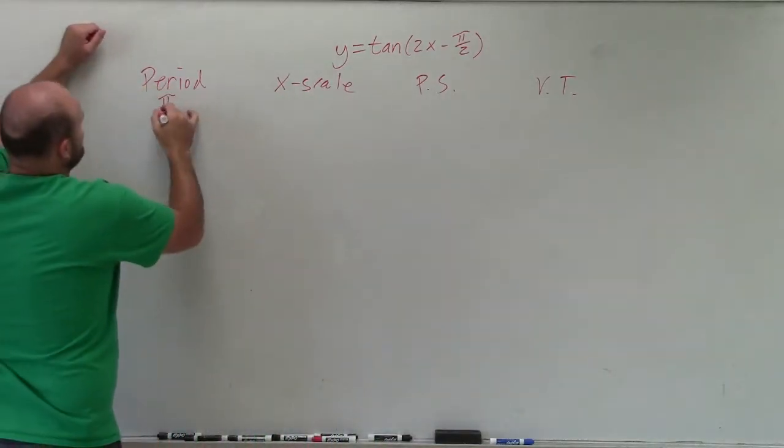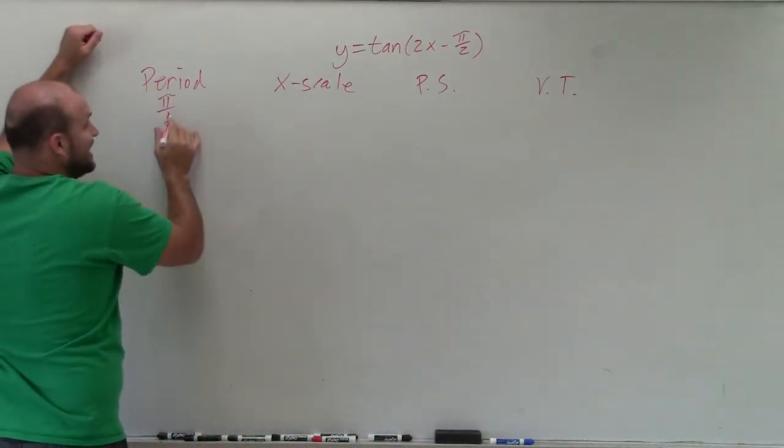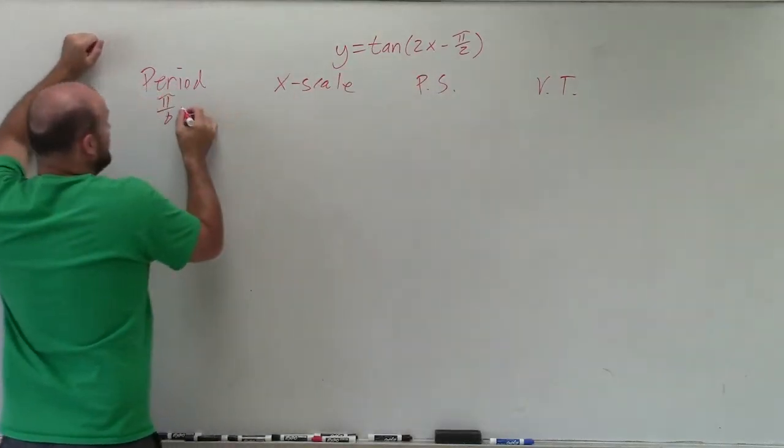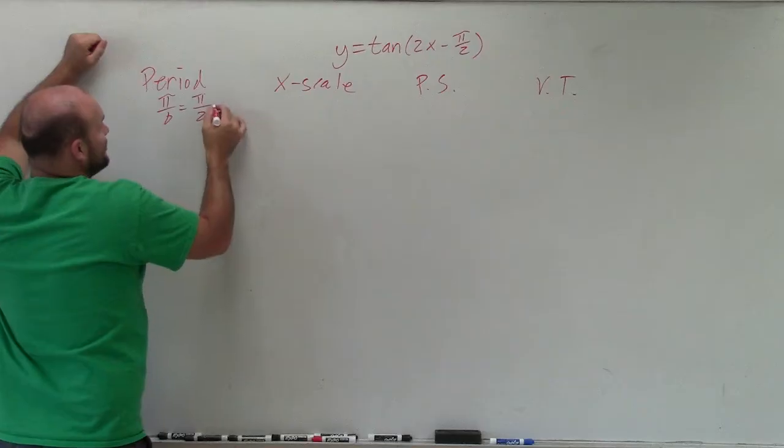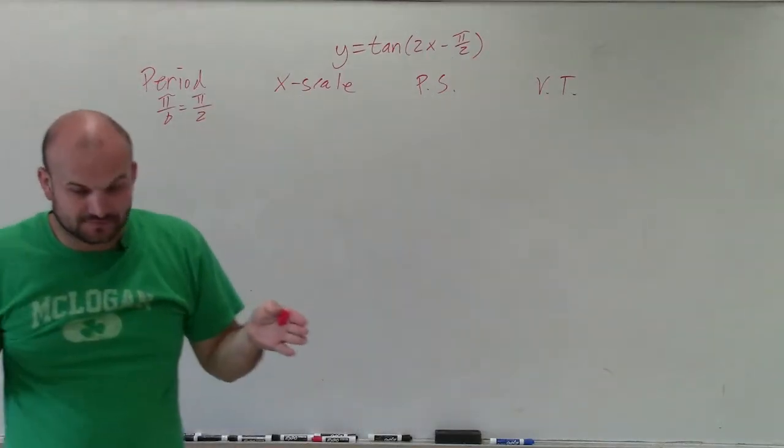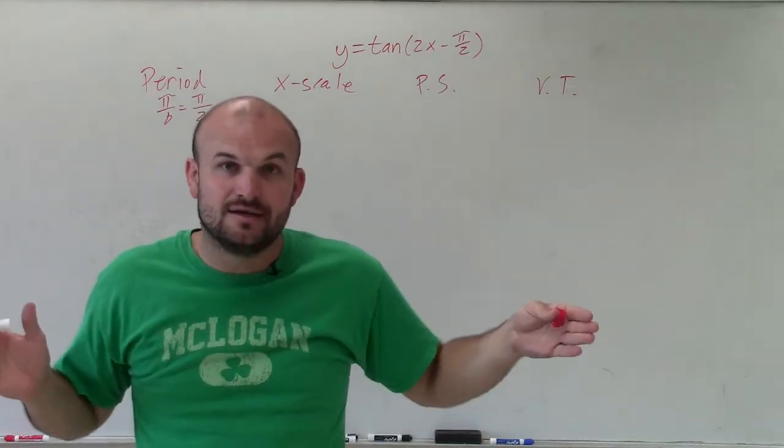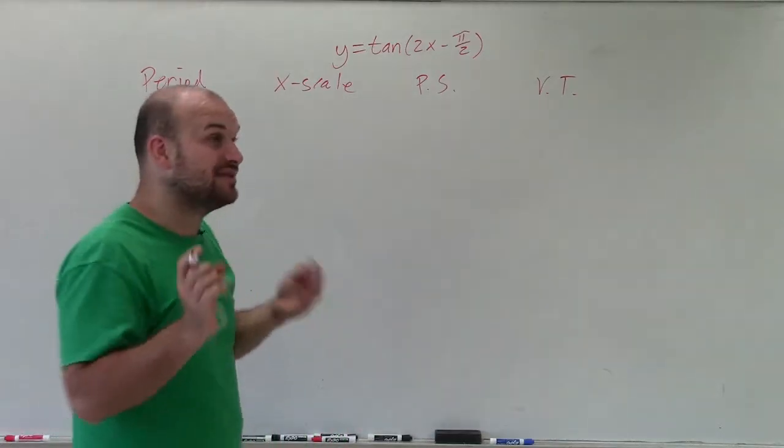But the period, remember, is just pi divided by b, which in this case, you can see my period has actually changed. So now my period is pi divided by 2. So instead of the period actually being pi for the parent graph, now it's pi half. So that's very important.